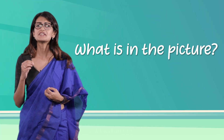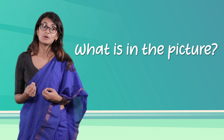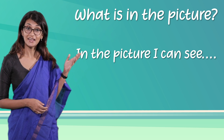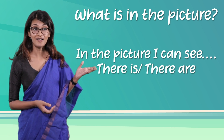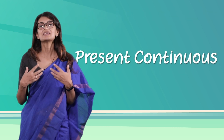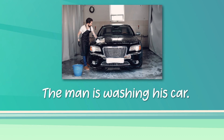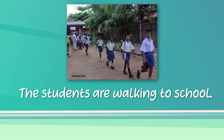When describing pictures, explain what is in the picture. You can start the description with phrases like 'In the picture I can see' or 'There is' / 'There are'. You can also use the present continuous when describing pictures. For example, 'The man is washing his car.' 'The students are walking to school.'